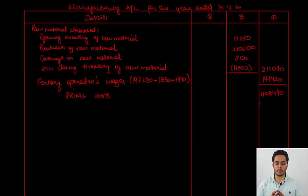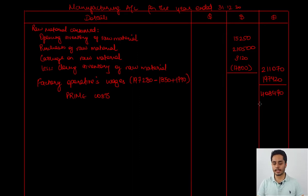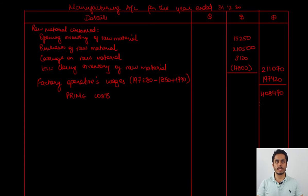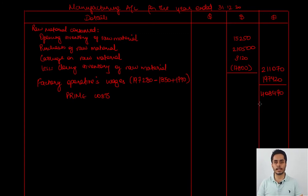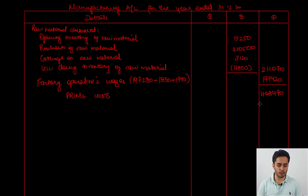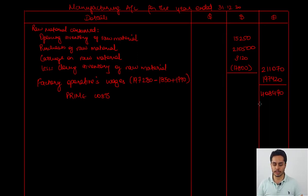Our prime cost, which is the total of direct material and direct labor, is 408,490. There is no direct expense given. If there was any other direct expense like a royalty, I would add that to arrive at the prime cost, but since no other direct expense is given, prime cost stands here.